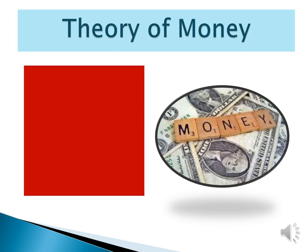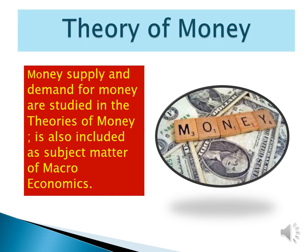Next one is the theory of money. Money means 'mudra' (currency). The demand and supply of money in any country directly impacts the economic activities of that country. Theories relating to the demand and supply of money are part of macroeconomics because money impacts the whole economy. So the theory of money, covering money supply and demand, is a major part of economic activities and is included as a subject matter of macroeconomics.